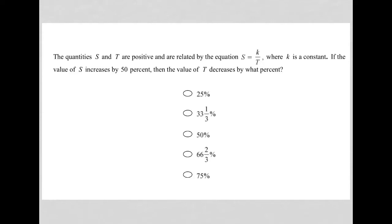So this question says the quantities S and T are positive and are related by the equation S equals K over T, where K is a constant.